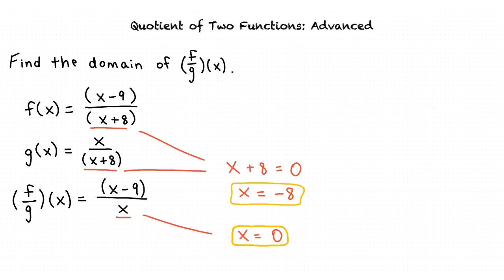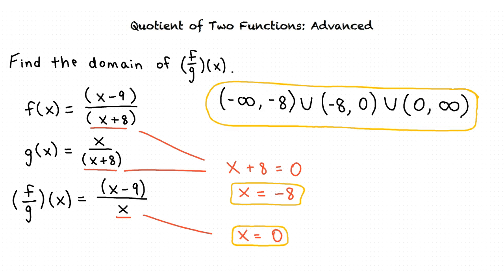After setting the denominators of f of x, g of x, and f divided by g equal to 0, we have found that we need to exclude 0 and negative 8 from our domain. Let's write our answer in interval notation. The domain of f divided by g of x includes all values from negative infinity up to but not including negative 8, all values greater than negative 8 and less than 0, and finally all values greater than 0 and less than infinity.